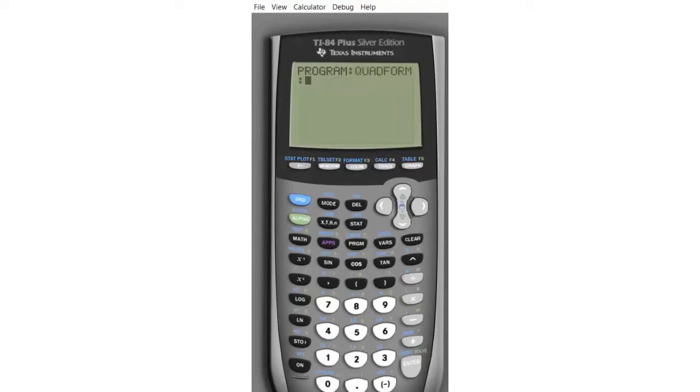Next, click Enter to move down to the next line. At this point, we want to input the variables we will use. Click on Program, then go to the right so you've got the column that says IO. Then click on Prompt. Using the green letter above the buttons, input your three input values, a, b, and c.